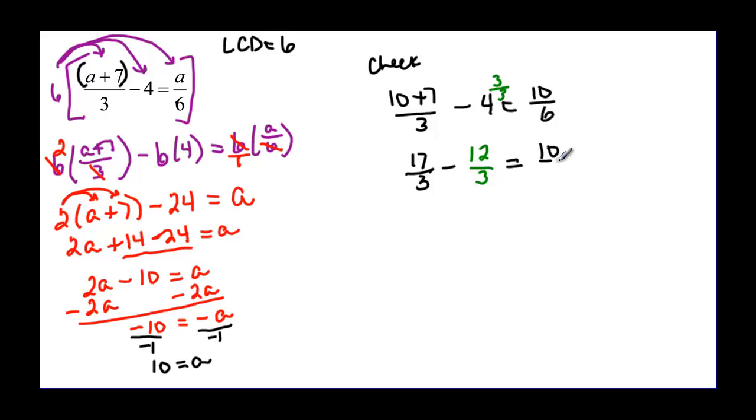17 minus 12 then on this side is 5 and over 3, equal to 10 over 6. And if I reduce 10 over 6, they are both divisible by 2, so it is 5 over 3 equal to 5 over 3. And now I know that a really is 10.